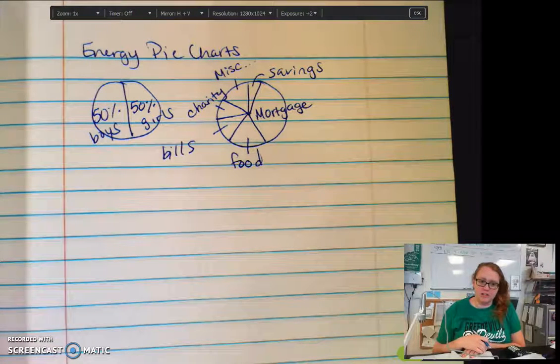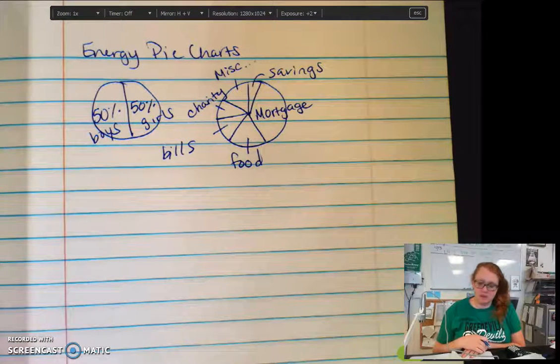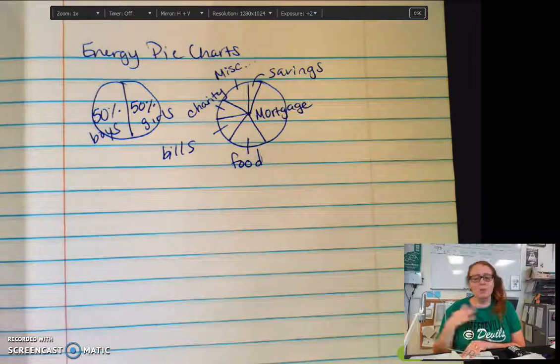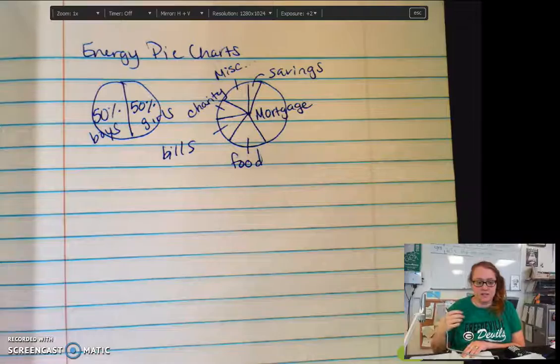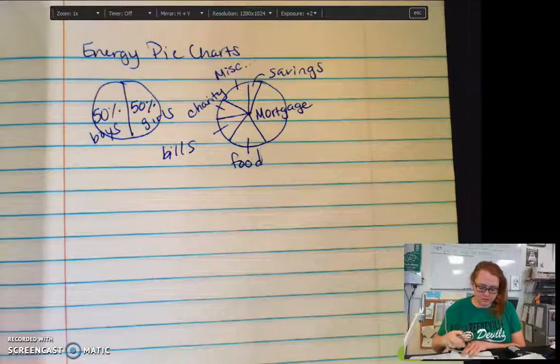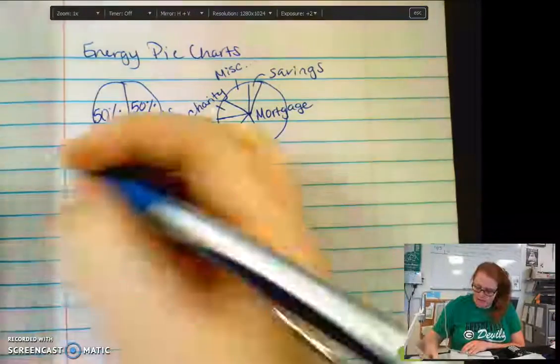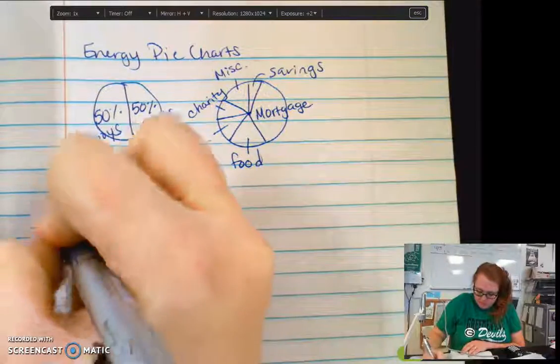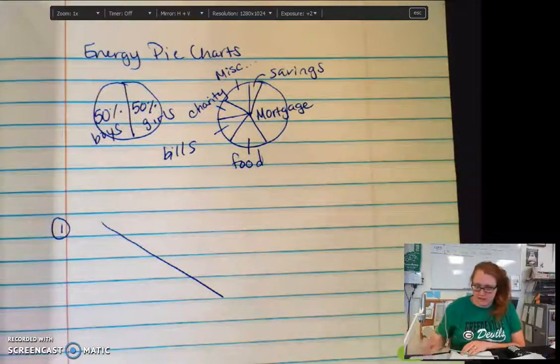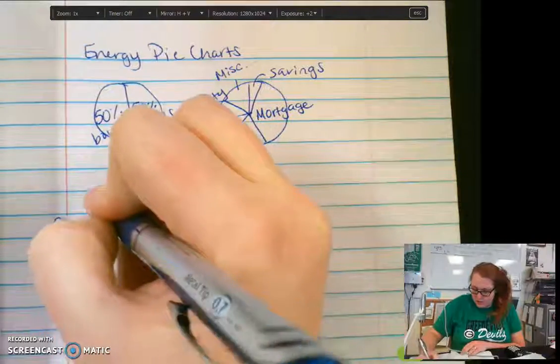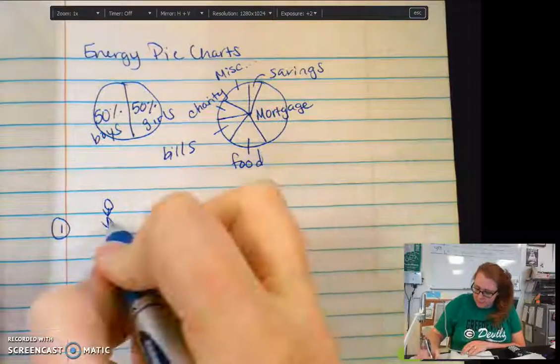So what we're going to be doing is we're going to look at different systems and draw pie charts for those systems, talk about what type of energy does the system have, how is the energy being transformed. So let's look at a couple examples. Our first example is a kid moving down a slide.